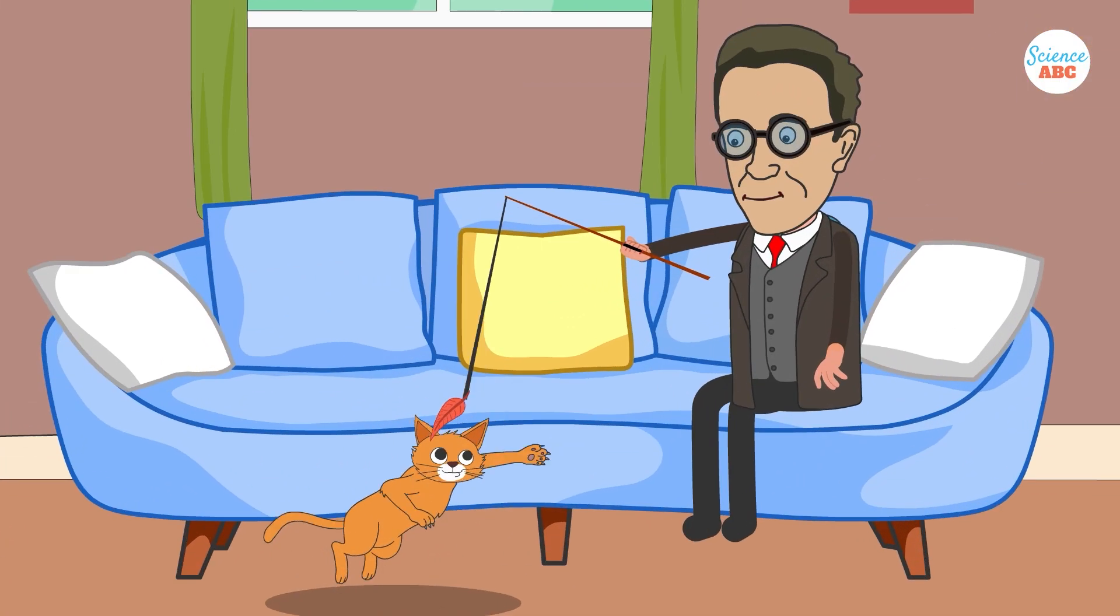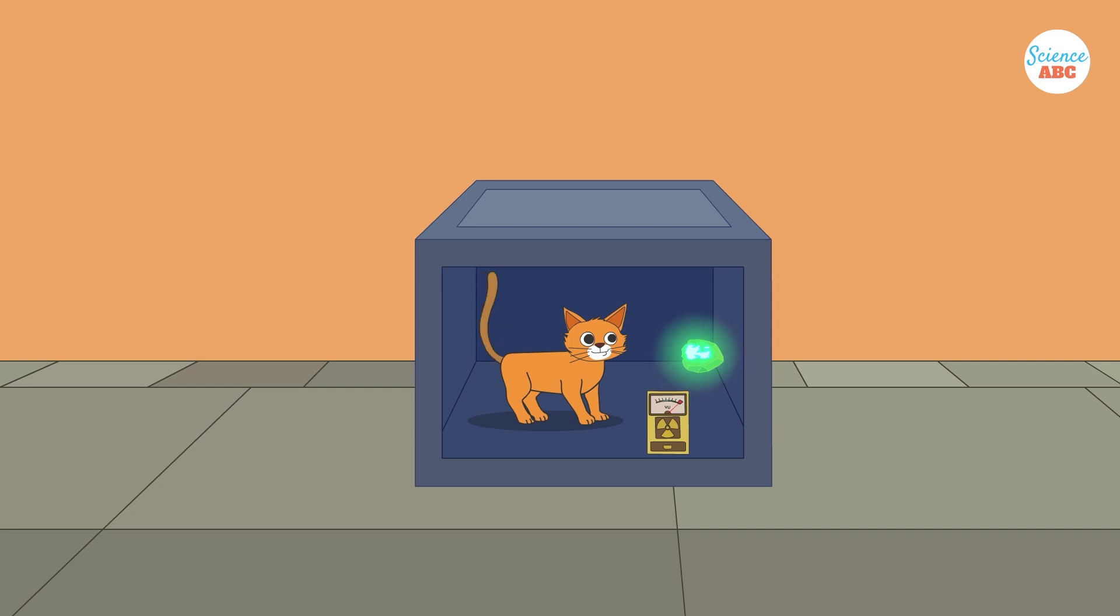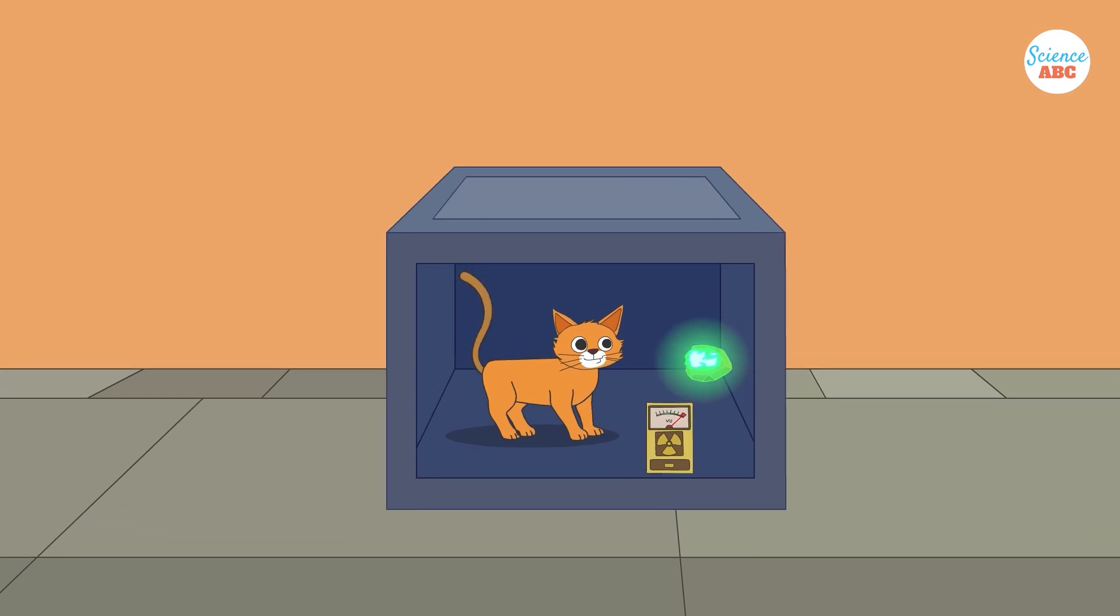To highlight this paradox, Schrodinger proposed his famous thought experiment. He imagined placing a cat inside a sealed steel box along with a device that contained a small amount of radioactive material and a Geiger counter. Over the course of one hour, there was a 50% chance that a single atom would decay.